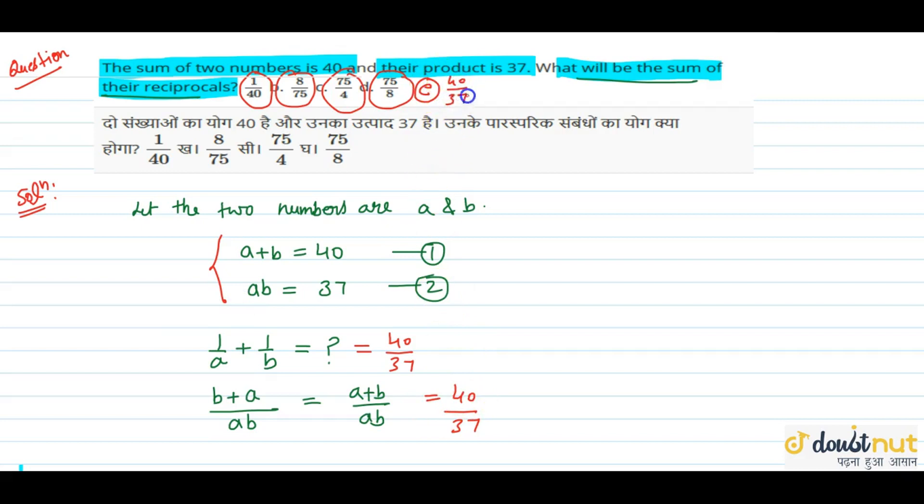The option is 40 by 37. It's very simple. It's just the sum divided by the product. If we have the value of the sum and product, we can find the sum of the reciprocals.